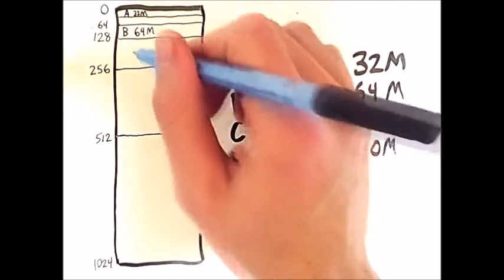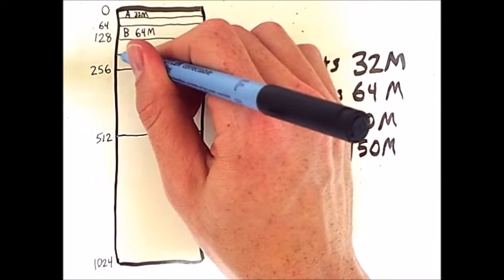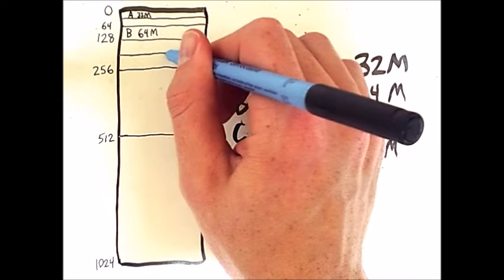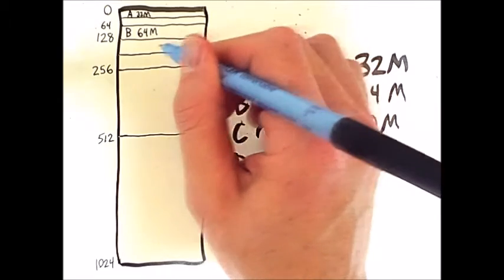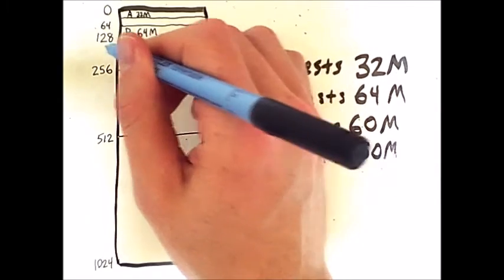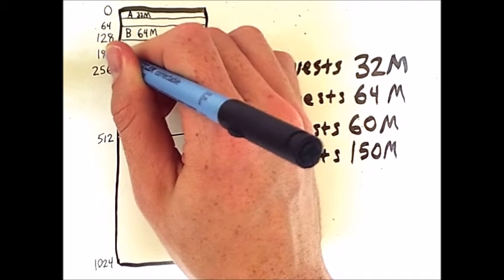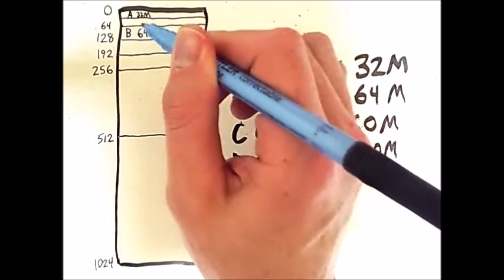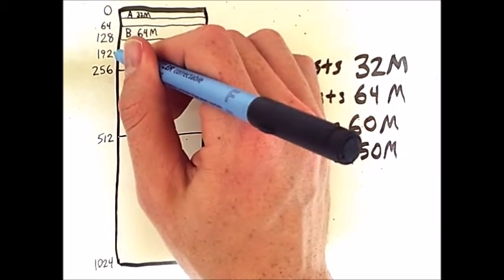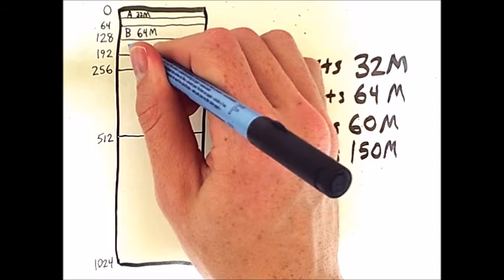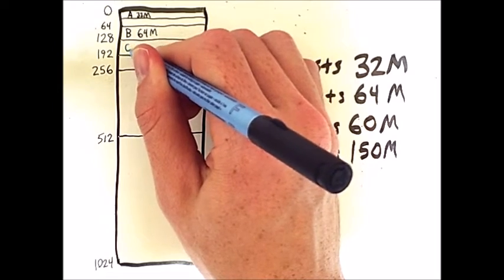64, which means that this split point here is at 192, that's 128 plus 64, and we can put process C right here.